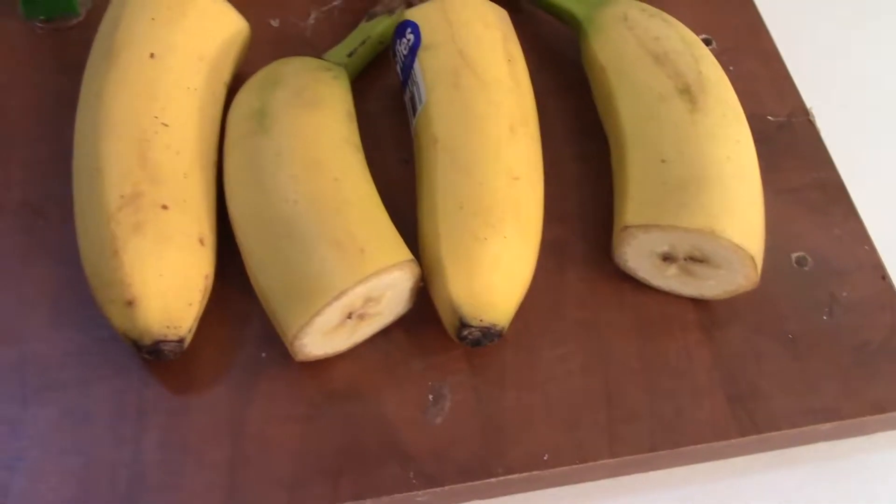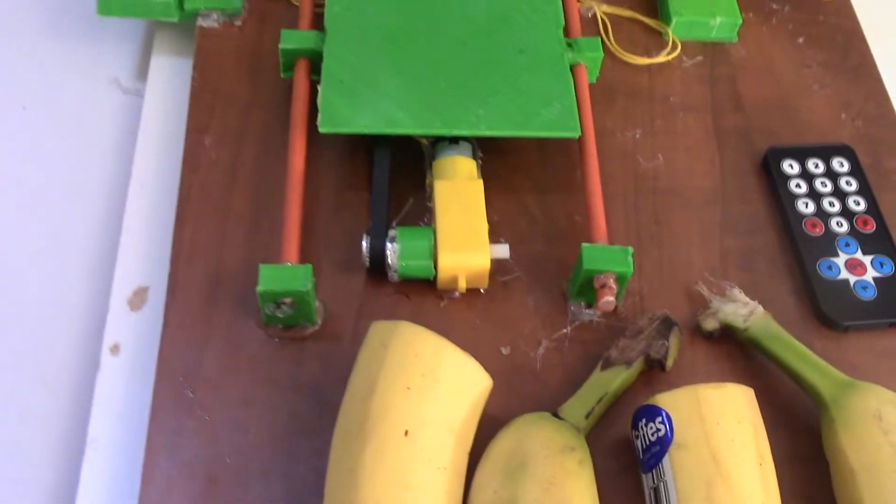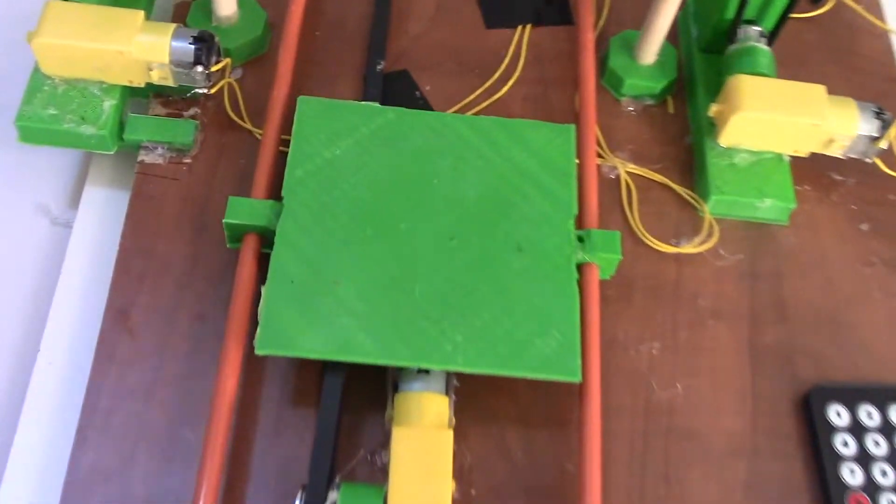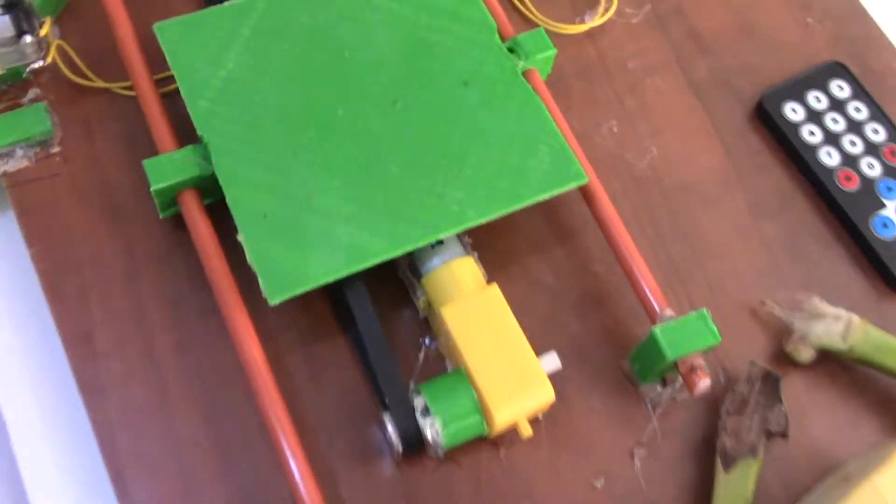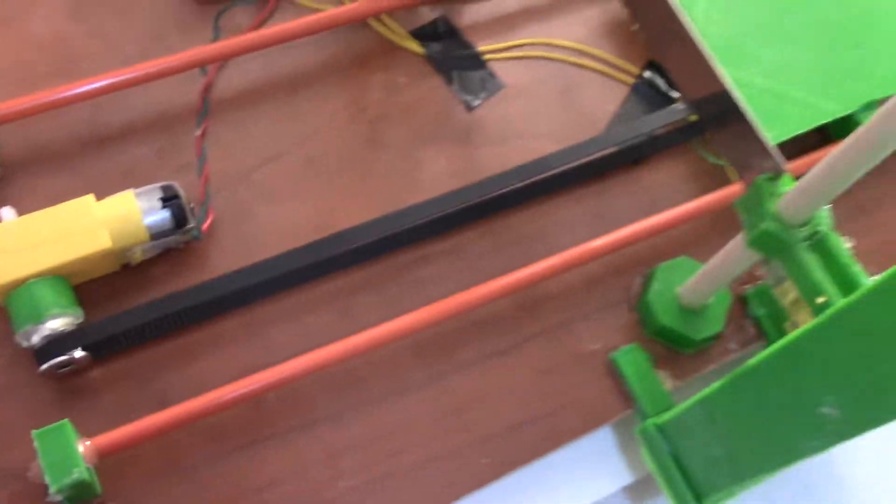The first part of this robot that I'll be showing you is the conveyor. The conveyor is a 10 centimeter by 10 centimeter base that goes back and forth with two yellow gearbox motors. These gearbox motors don't have the highest torque and they can't produce that much force, but they are decently fast and that's what I need for this.